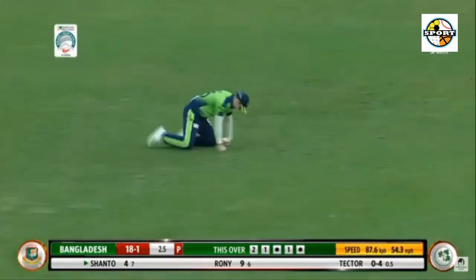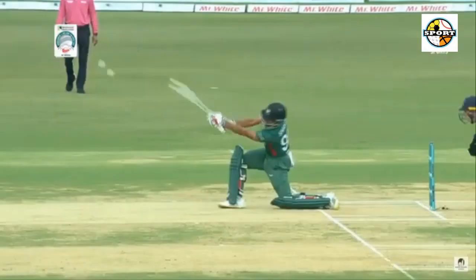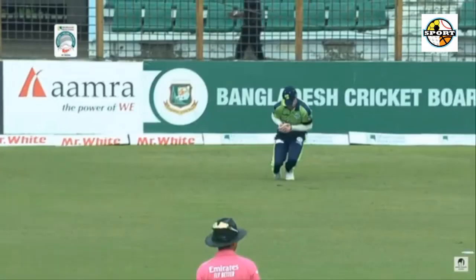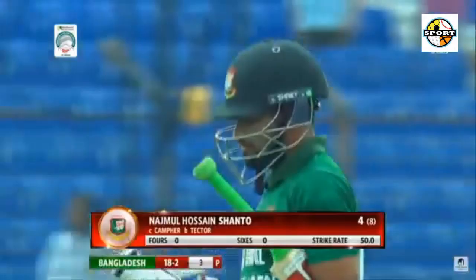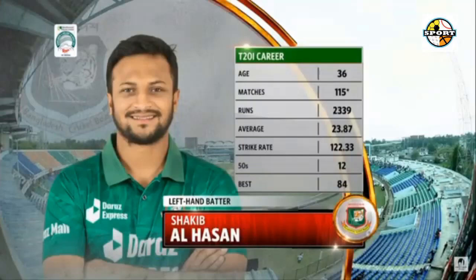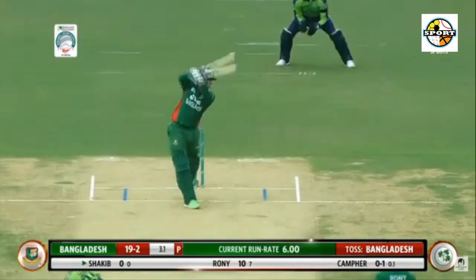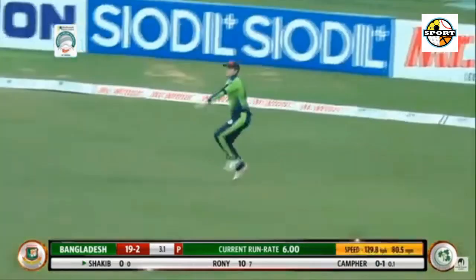5.4: Shorafal Islam to Sterling, 4 — back of a length around off, Sterling opens up the hips and whacks the pull over mid-wicket; he's looking in ominous touch. 6.4: Naza Mahmoud to Tector, 4 — short and wide, poor delivery, and Tector capitalizes, cutting it away through backward point for 4.